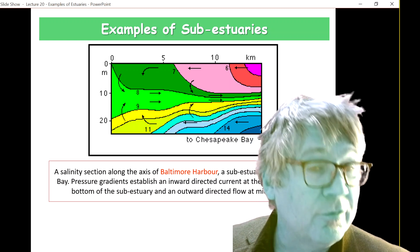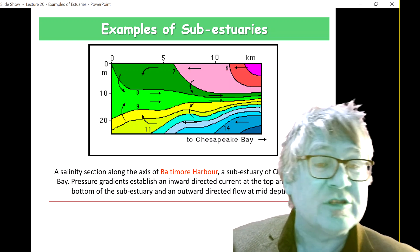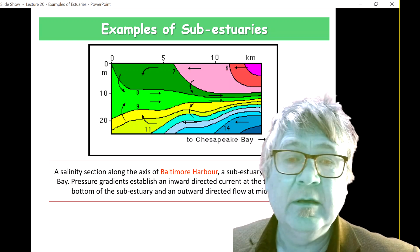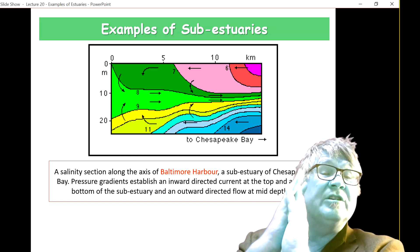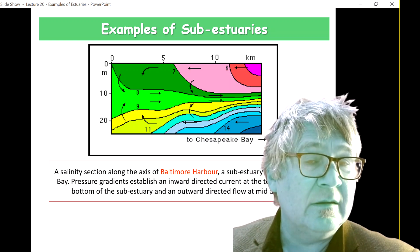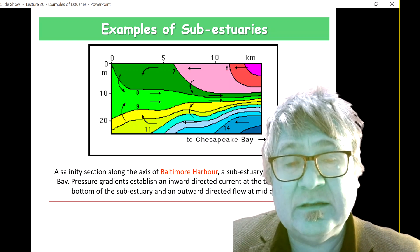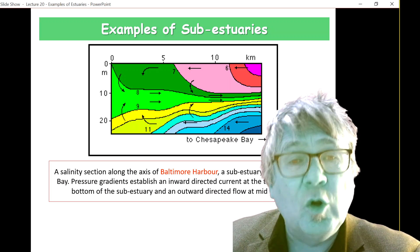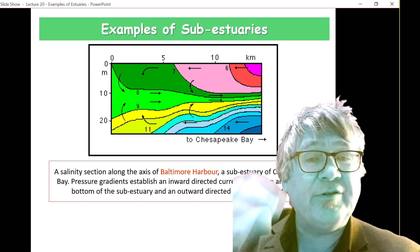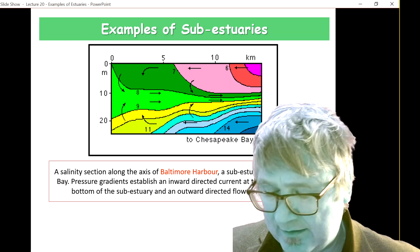Indeed, these flows are all driven through pressure gradients and the particular structure of density stratification. It's also worth mentioning that temperature can modify the circulation — it's not only salinity. Temperature plays a role as well, but the key stratification is set up by the salinity field.